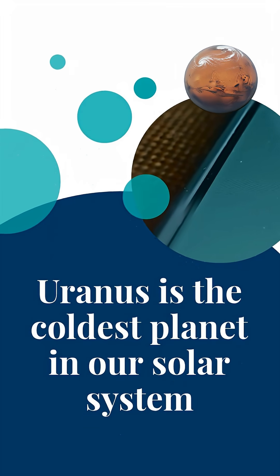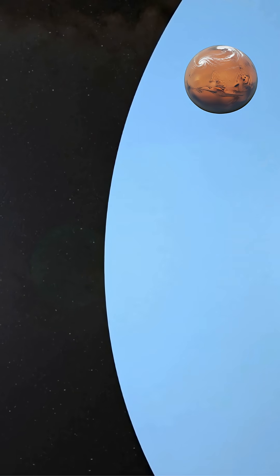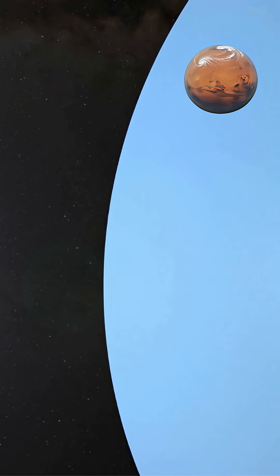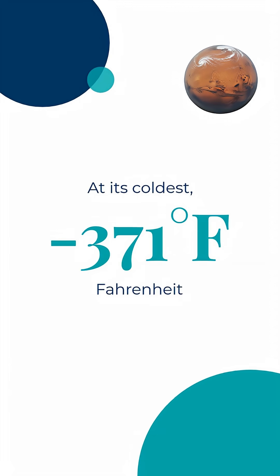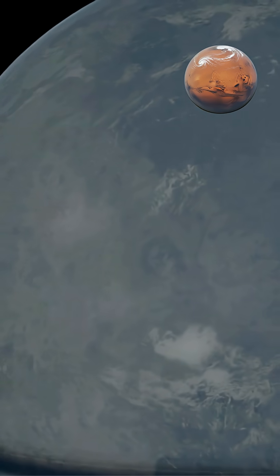Uranus is the coldest planet in our solar system, with temperatures averaging minus 320 degrees Fahrenheit and negative 195 degrees Celsius. At its coldest, the planet's atmosphere reaches minus 371 degrees Fahrenheit, negative 224 degrees Celsius. But what keeps this ice giant so frigid?